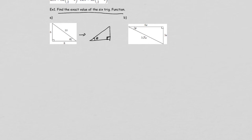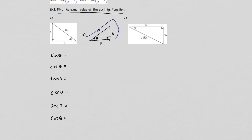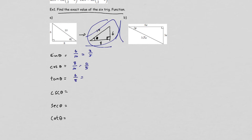So with theta at the bottom left, the hypotenuse — opposite the 90 degrees — is 10. Opposite of theta is 6, and adjacent is 8. Using this, sine is 6 over 10, which reduces to 3 over 5. Cosine is 8 over 10, which reduces to 4 over 5. Tangent is 6 over 8, which gives you 3 over 4.